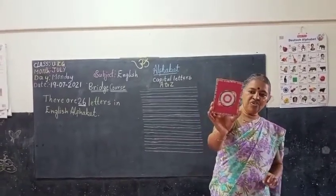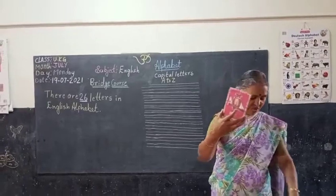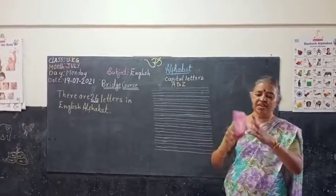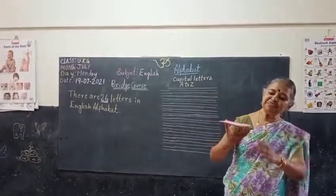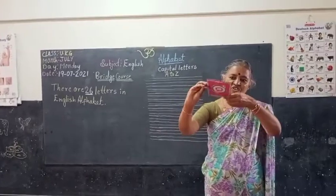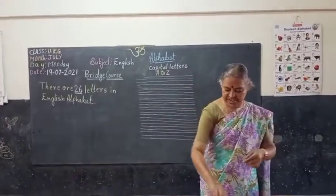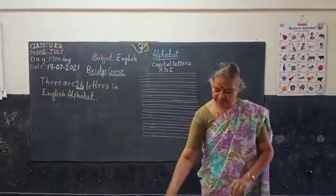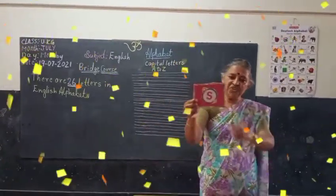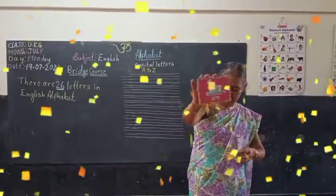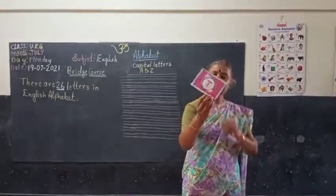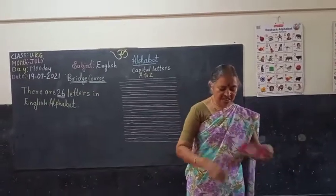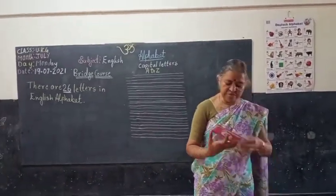O for owl. Q for scissors. Q for queen. R for rabbit. S for swan. T for tiger — tiger is a wild animal.